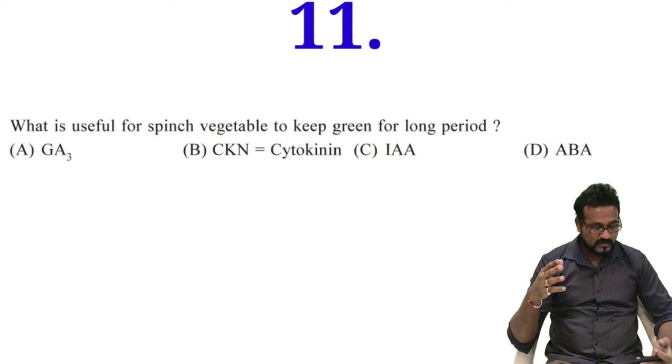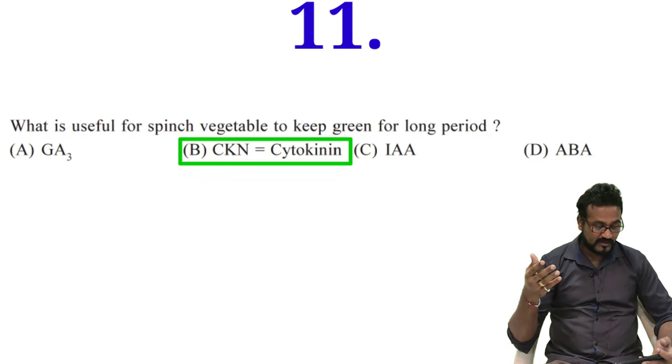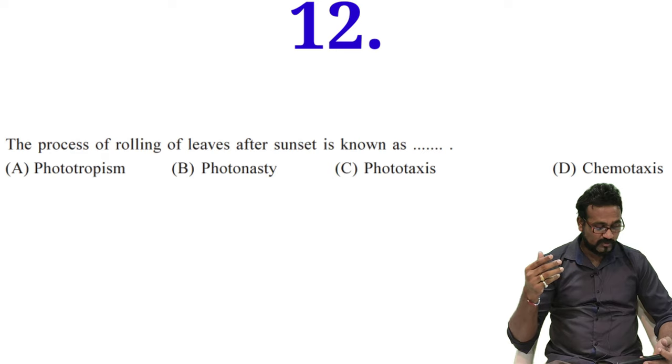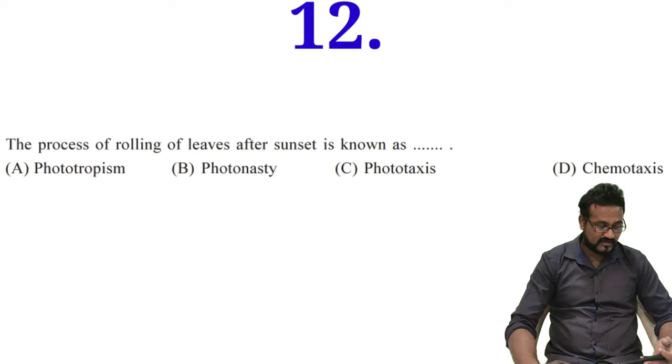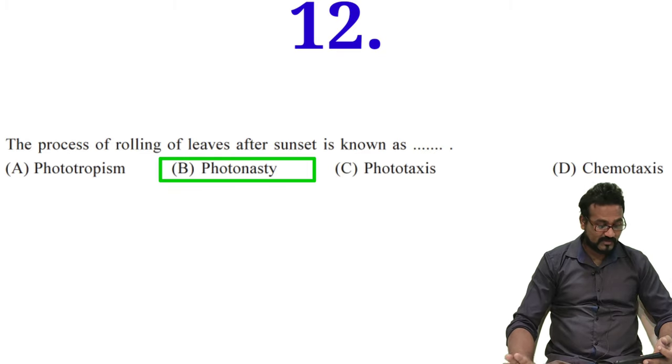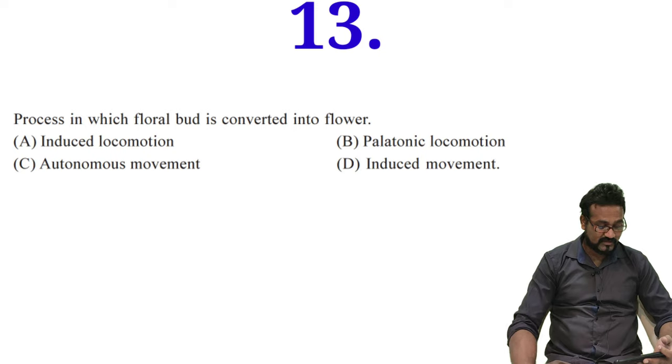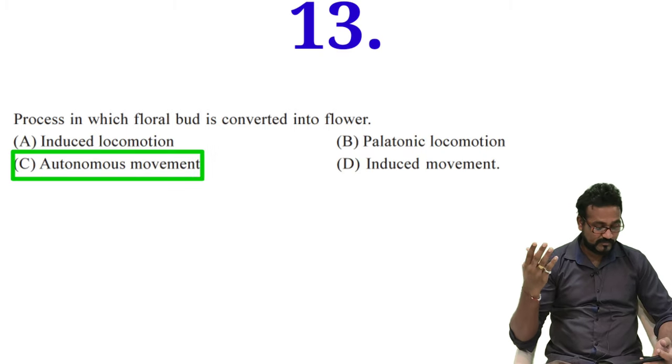Eighth question is what is useful for spinach vegetable to keep it green for a long period? Option B, cytokinin will be very useful. Obviously cytokinin is very useful for keeping material fresh. Twelfth question is the process of rolling of leaf after sunset - it is known as photonasty. You should remember these types of words. Thirteenth question - floral bud is converted into flower, which process you will call it as? Option C will be the answer because it is innate process, an autonomous movement.